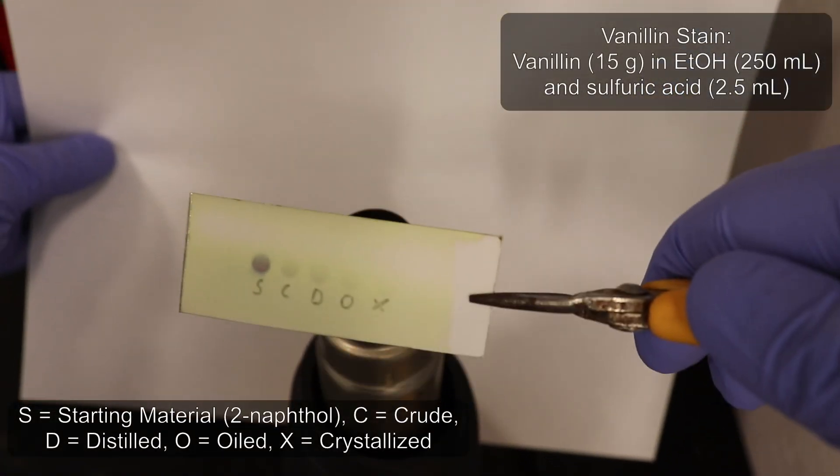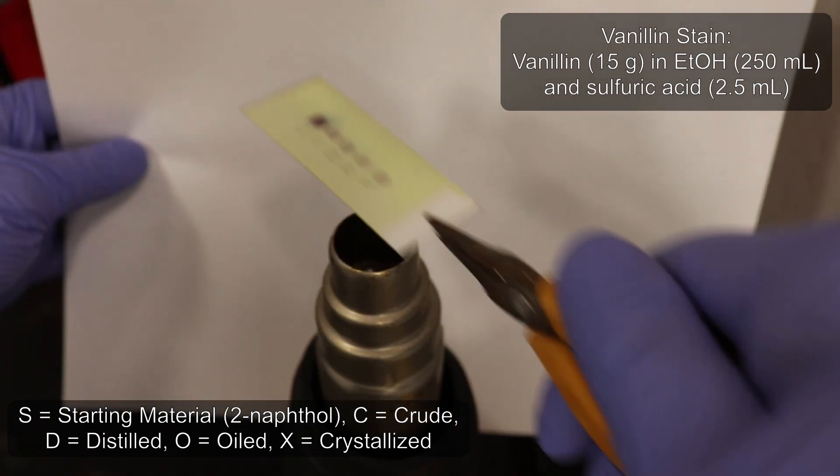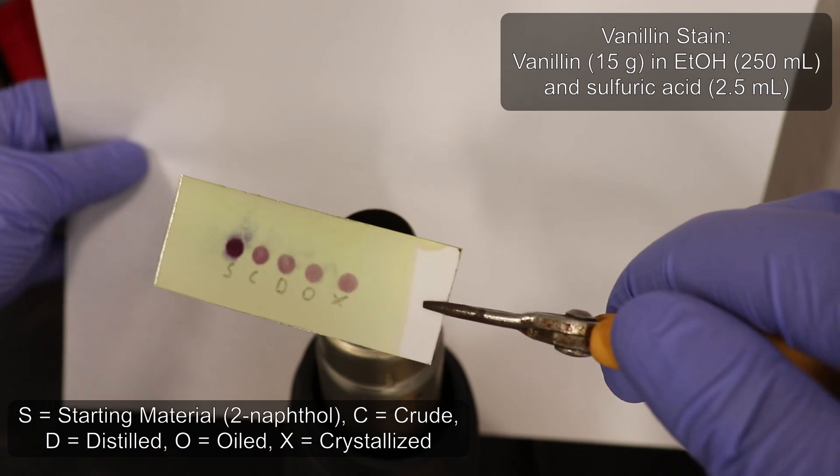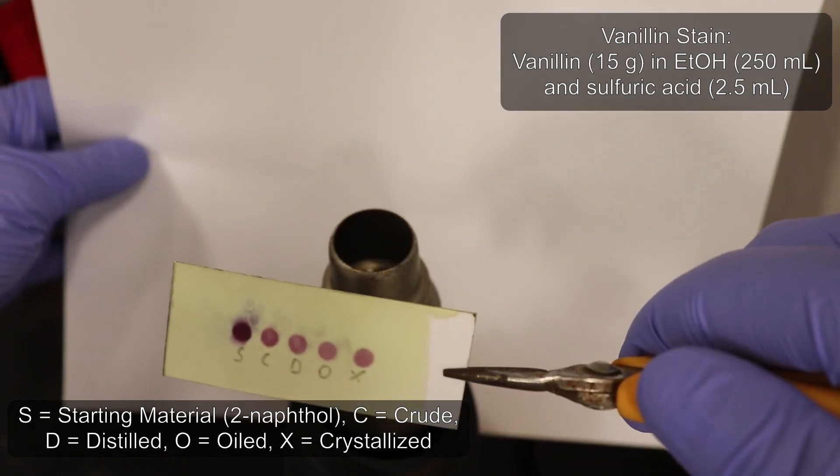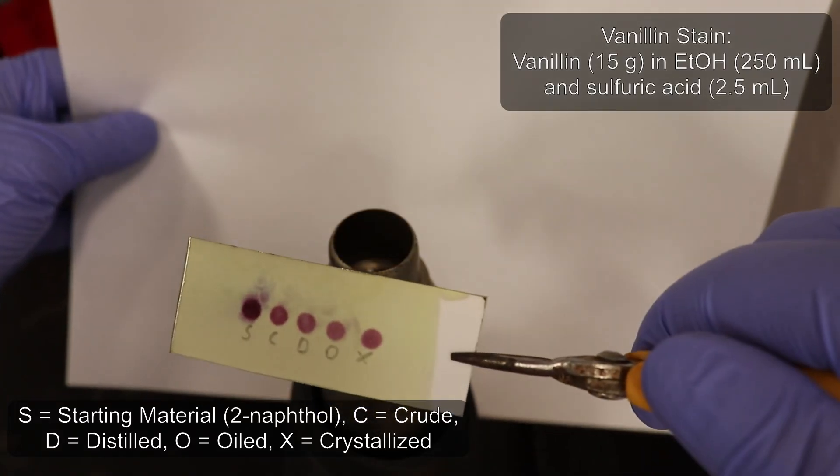Using vanillin stain, the starting 2-naphthol takes on color much more rapidly and develops a much stronger color than the 6-bromo-2-naphthol product. However, I wasn't super satisfied with this stain as it just gave spots with two different shades of the same color.